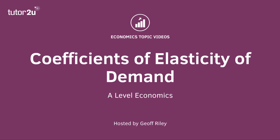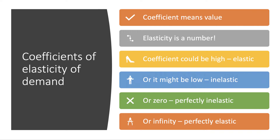Welcome to this micro video covering the relevance of the coefficients of three different elasticities of demand. A coefficient is just a number — a value. Elasticity is essentially a number you put some figures into a formula and a number pops out. That coefficient could be high, in which case we say demand is elastic, or it could be a low figure — demand is inelastic. Indeed it could be zero, perfectly inelastic, or infinity, perfectly elastic.